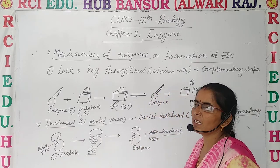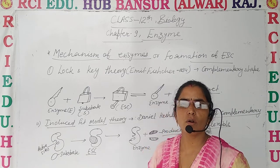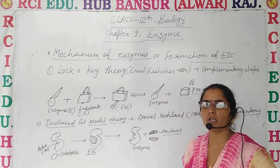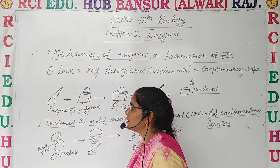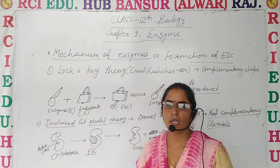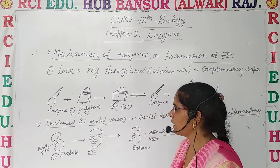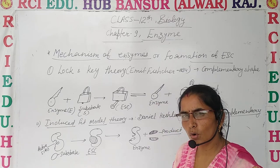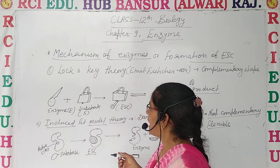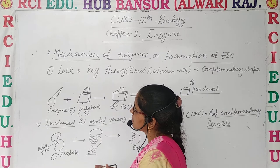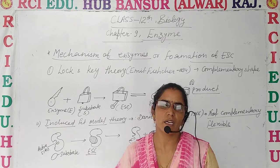It was explained by Emil Fischer and Daniel Koshland. Emil Fischer gave the theory known as the Lock and Key theory, which he explained in 1894. He states that in the same manner a specific key can unlock a specific lock, any specific enzyme can fit a specific substrate in its active site.